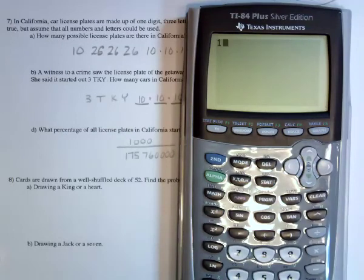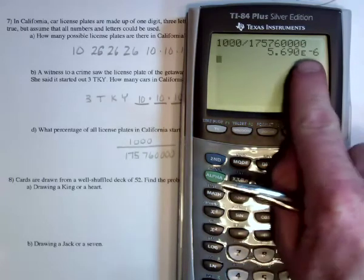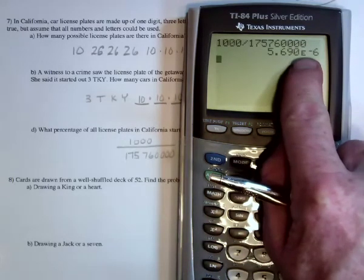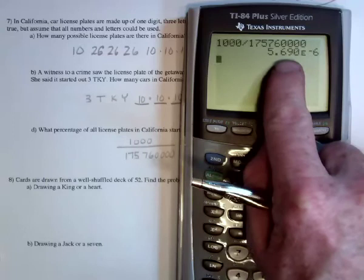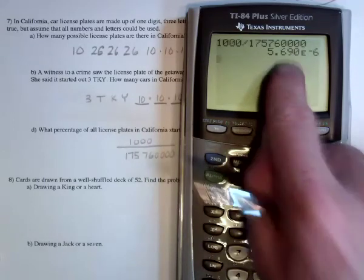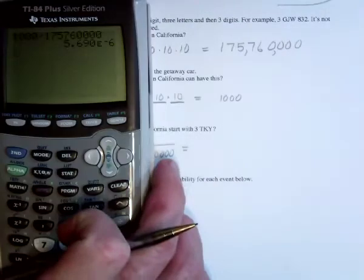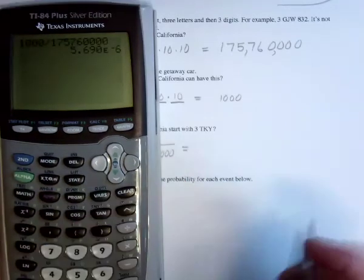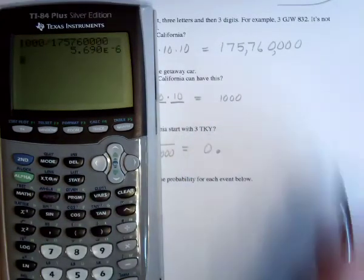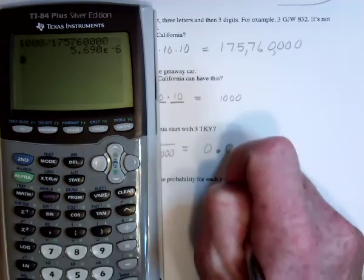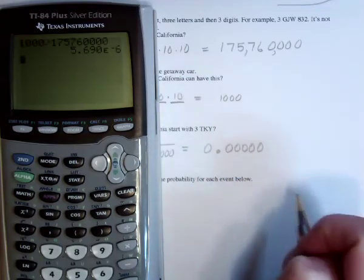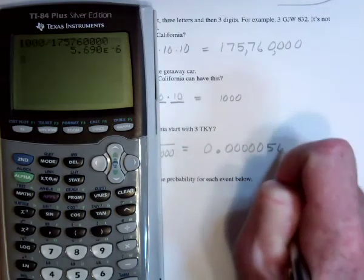What percentage is that? Well, a thousand out of 175,760,000. This is the calculator's way of writing scientific notation. That's saying take this decimal, move it to the left by six places, which means it's going to be the decimal place and then five zeros and then the 569.